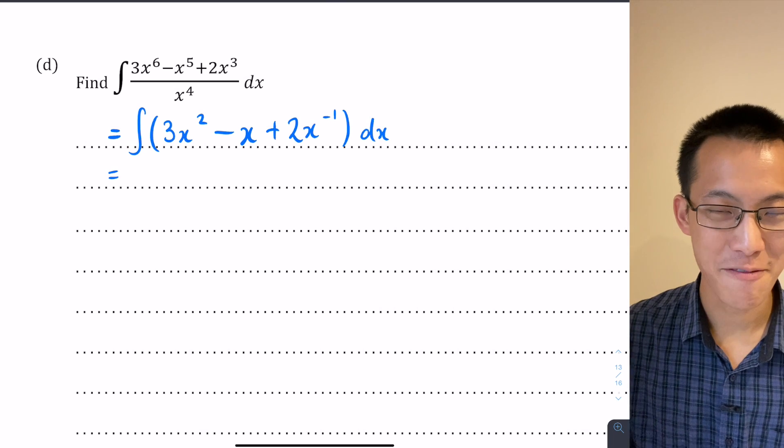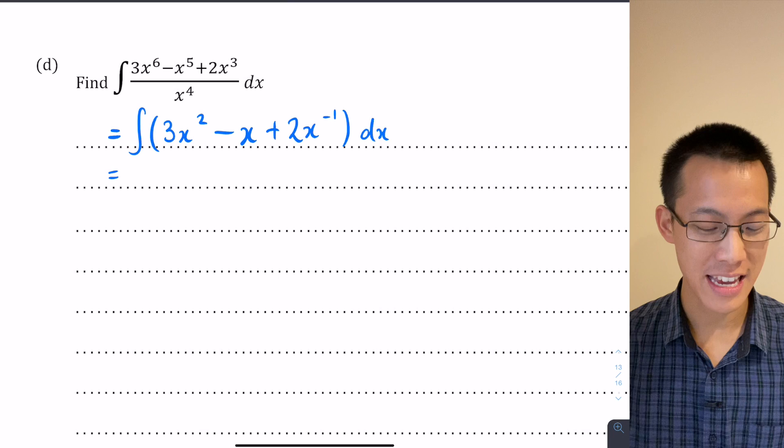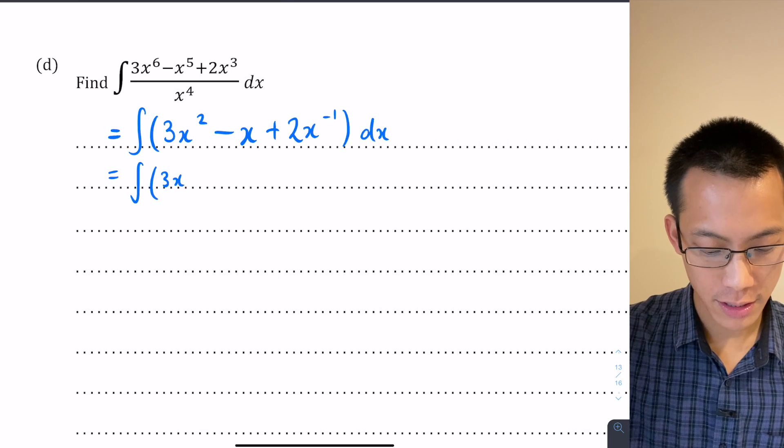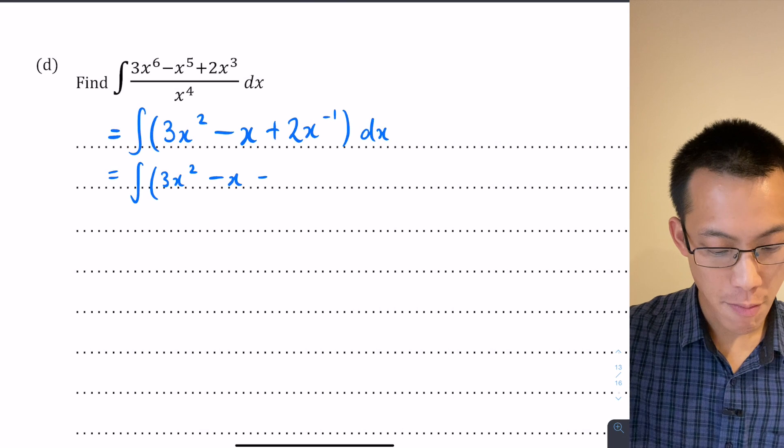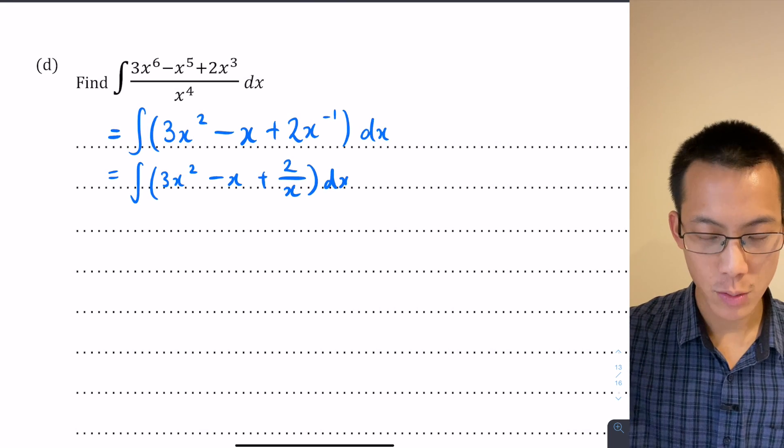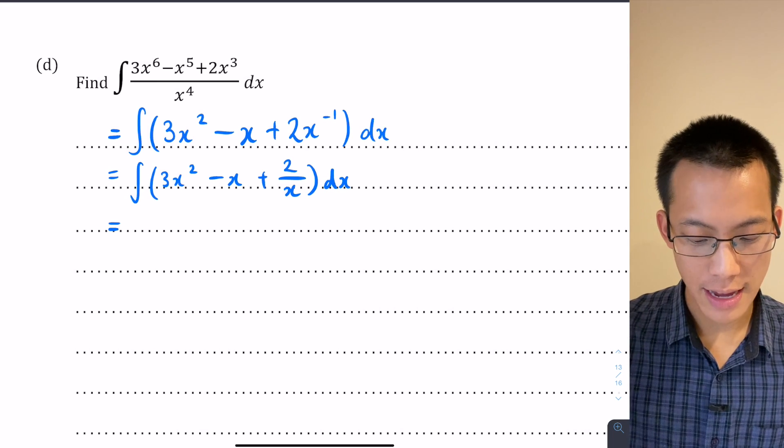Now I reflexively wrote this in index form because usually that's the way the integration works easier for us, but actually that last term there, the 2x to the negative 1, you might recognize it more easily if you saw it as 2 over x. What's the integral of 2 over x? Well when we get there it's going to be 2 of log x.